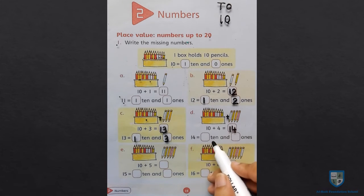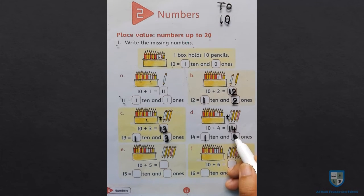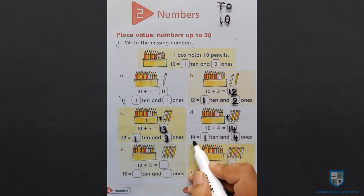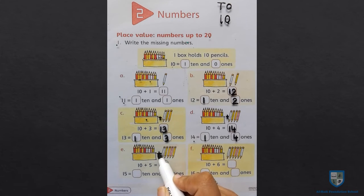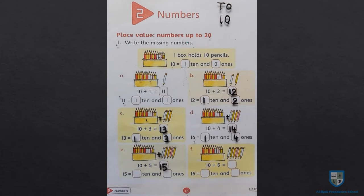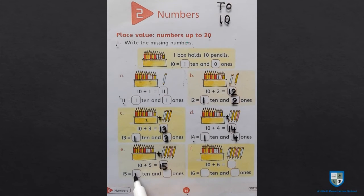Next E: 10 plus 5. 10 में 5 पैंसिल प्लास होंगी तो 10 plus 5 is equal to 15. 15 में 1 ten होगा and 5 ones होगा. 1 ten and 5 ones is equal to 15.